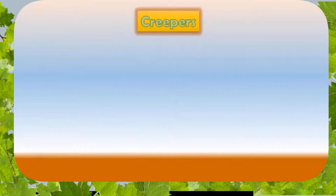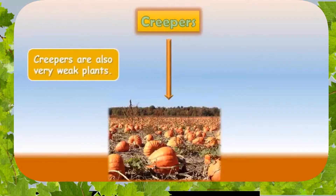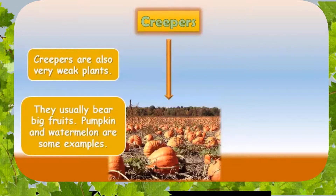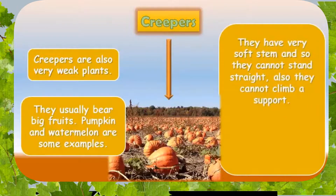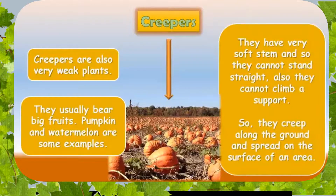We also have creepers. Creepers grow on the ground. An example is the watermelon — you can see it in the picture. They are very weak plants. They creep on the ground and spread across the surface of the area.